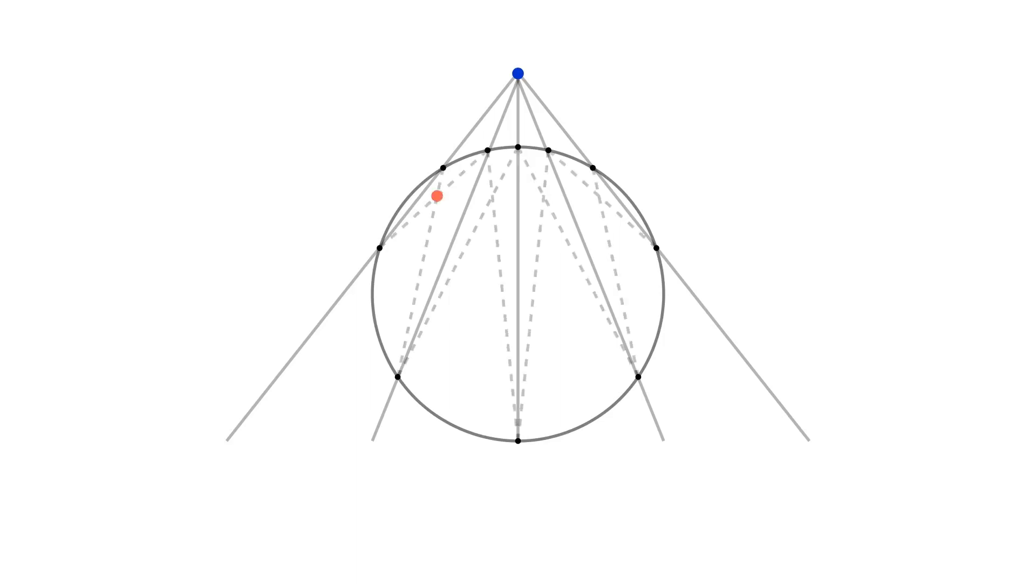We start with a circle and a point. Draw a bunch of lines from this point and intersect them with a circle. For every two lines, consider the intersection of diagonals in the quadrilateral they form.